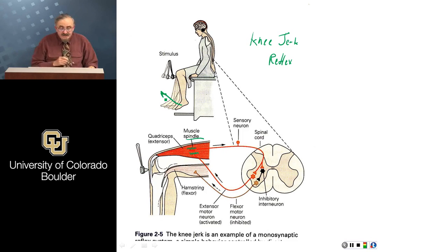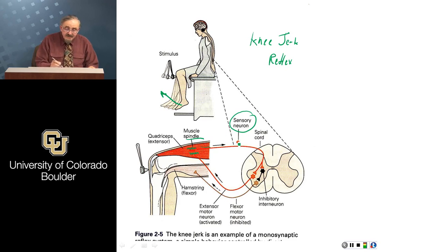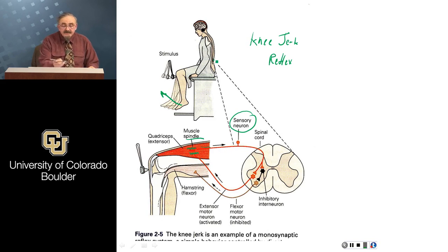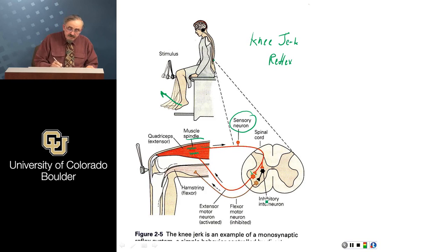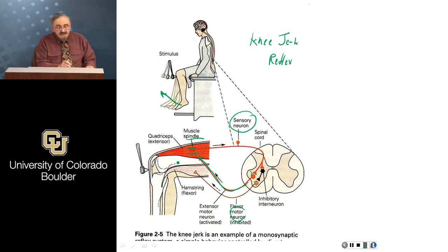This operates by sending a signal from the muscle spindle through a sensory neuron — with the cell body sticking off to the side — along a myelinated axon into the spinal cord in the lower back, causing a signal to flow out through synaptic endings into the dendrites of a motor neuron, which then sends a signal back to cause the muscle to contract.